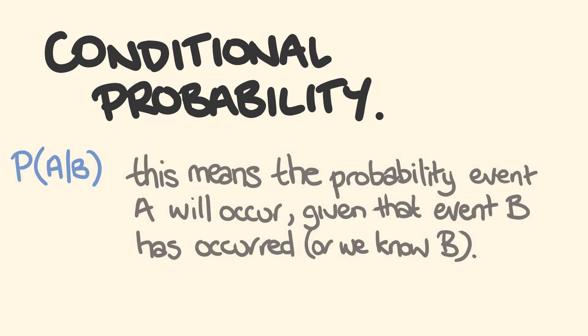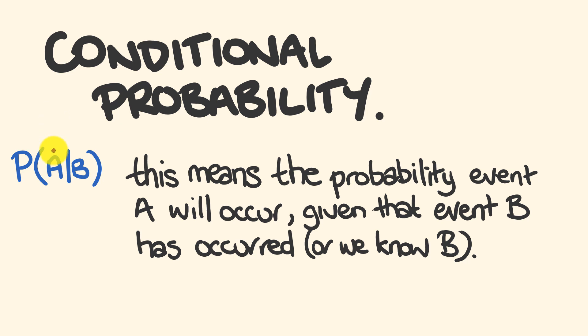Now what is this? Conditional probability is written like this. It means: what's the probability of event A occurring, given that event B has occurred? Or we know what event B actually is.